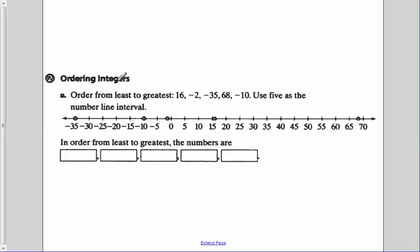Now let's order integers from least to greatest: 16, negative 2, negative 35, 68, negative 10. Use 5 as the number line interval. That means that every single one of these gaps is a difference, or each step would be 5 between. Between 5 and 0, the absolute value of 5 is 5, and between negative 5 and 10 we have a difference of 5. Let's look at our points that we have to look at.